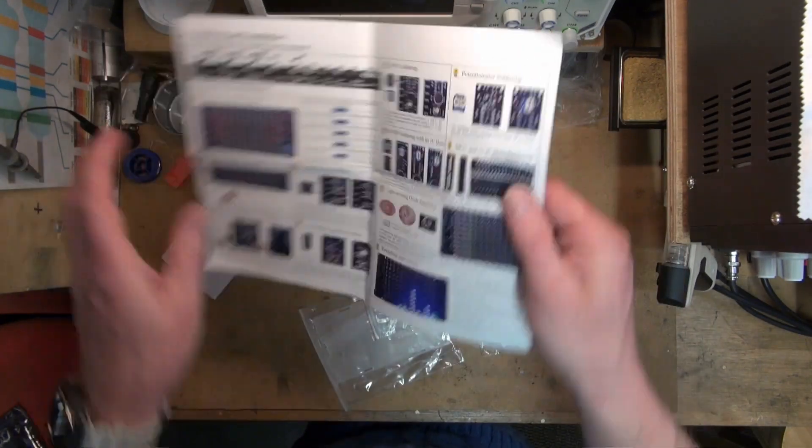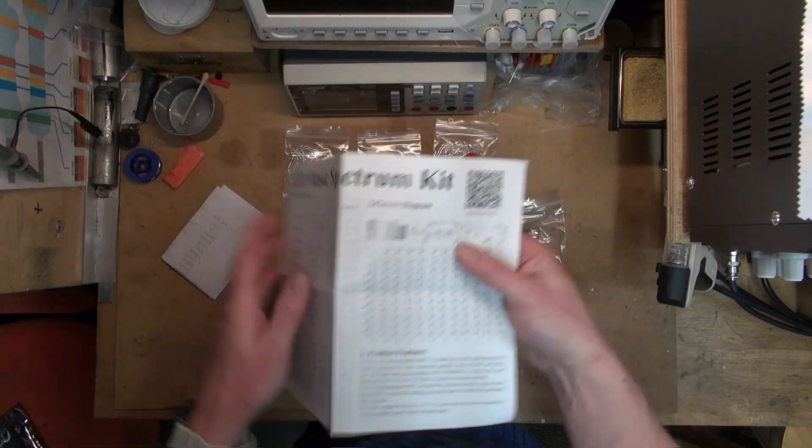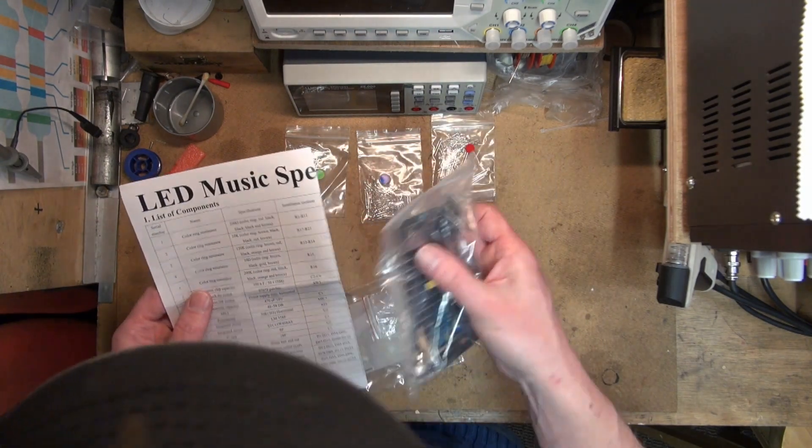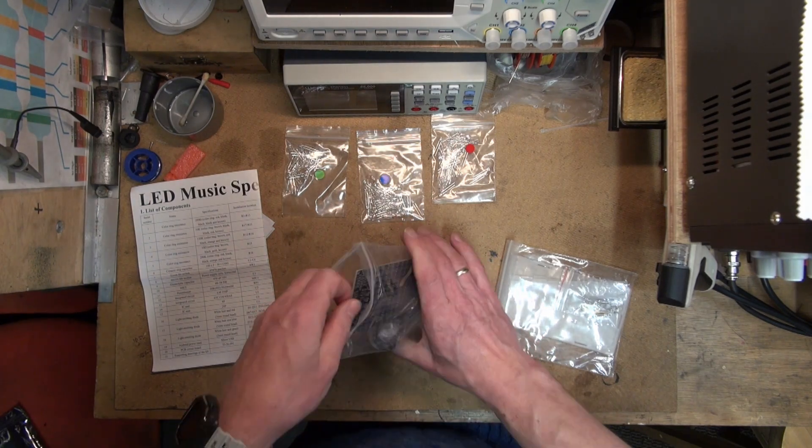So it shows you which order to build it, and here is an overview of components. The markings on here are also on the circuit board. I hope that makes building a bit easier.